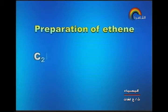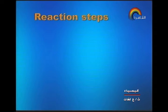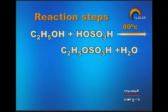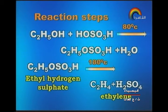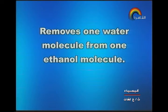This is the preparation of ethene (ethylene) gas. The equation: ethanol with concentrated sulfuric acid at 180°C gives ethylene and water. Reaction steps: ethanol reacts with sulfuric acid at 80°C giving ethyl hydrogen sulfate and water, then by thermal decomposition of ethyl hydrogen sulfate it gives ethylene and sulfuric acid. The role of concentrated sulfuric acid is that it removes one water molecule from the ethanol molecule.